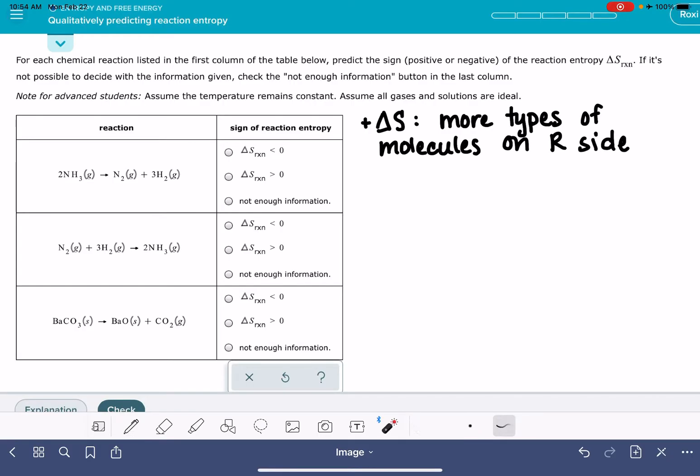Let's look at the very first reaction because this is a good example of this. In the first reaction, we have only one type of molecule on the left, but we have two types of molecules on the right. Because we have more types of molecules on the right-hand side, this is an increase in entropy for this reaction.